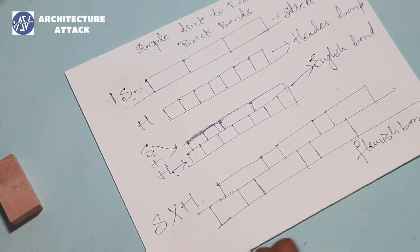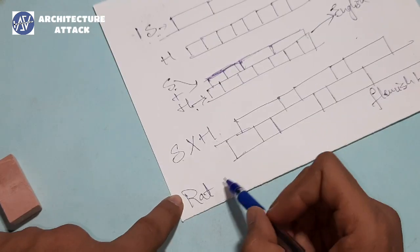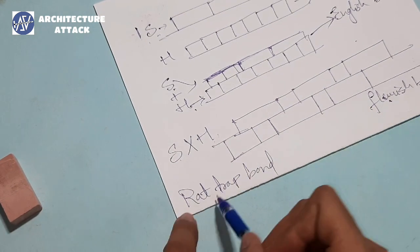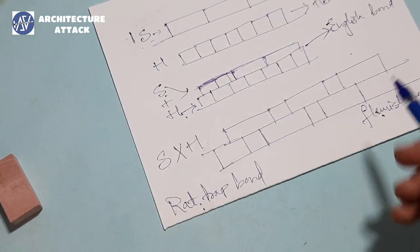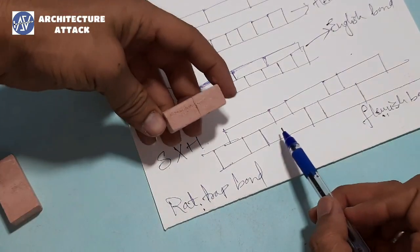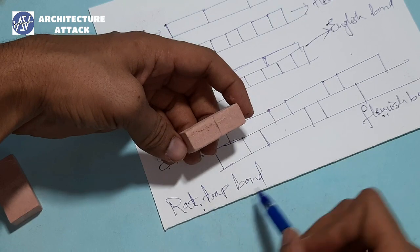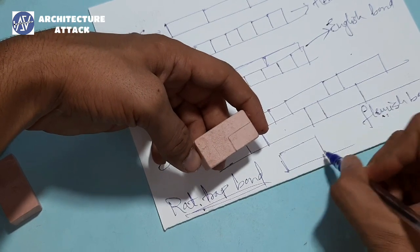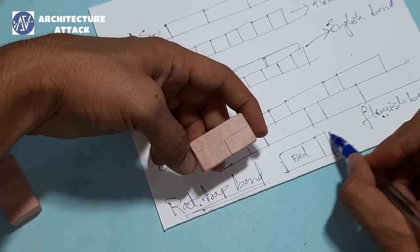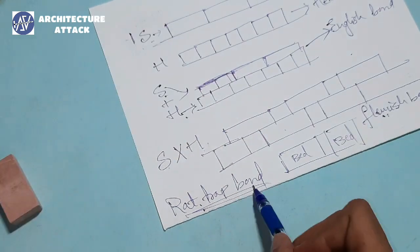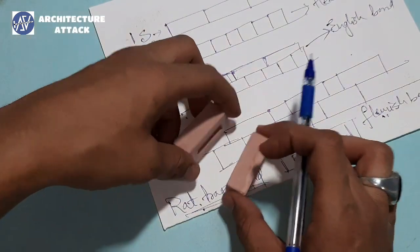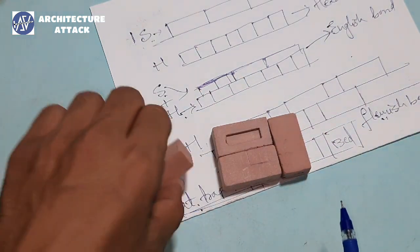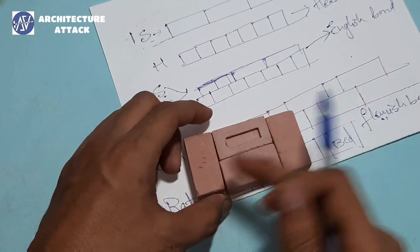What is rat trap bond? Rat trap bond is similar to Flemish bond. The difference is: in Flemish bond in elevation you see the stretcher face, but in rat trap bond you see the bed face in elevation. I'll place it and show you. See, this is the placement of Flemish bond. If we place bricks like this, on their edge, then this is a rat trap bond.